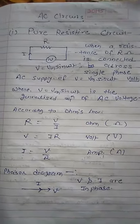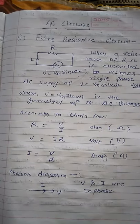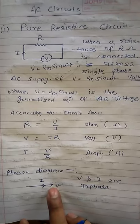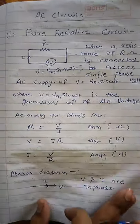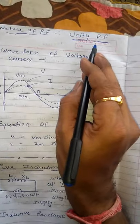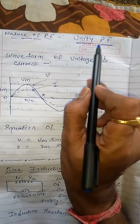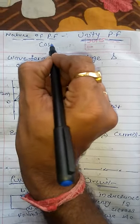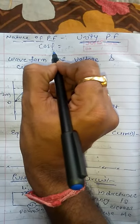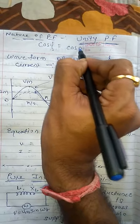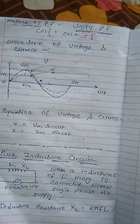In the phasor diagram for a pure resistive circuit, voltage and current are always in phase with each other. The nature of power factor for a pure resistive circuit is unity power factor. The angular displacement φ is 0, so cos(0) equals 1 — that gives us unity power factor.